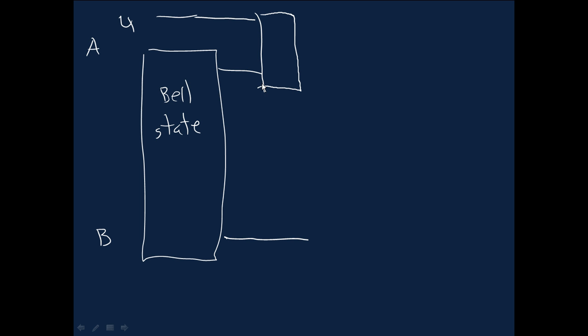we have Alice who has a state psi as well as sharing half of a bell state with Bob. And the way, all Alice does with that is she does a bell basis measurement and she sends her measurement result, the classical measurement result over a classical communication channel off to Bob, who, depending on which of the four measurement outcomes happens, applies a recovery.